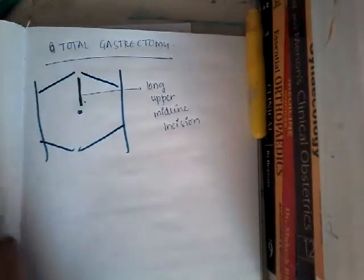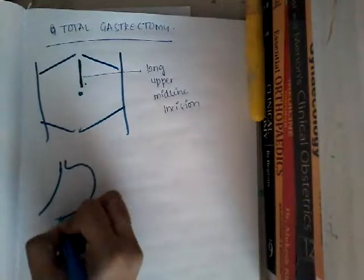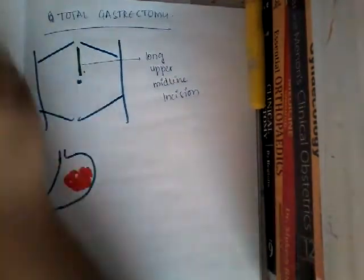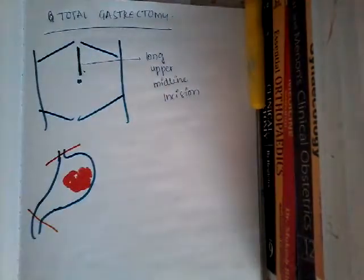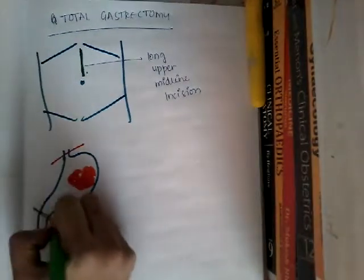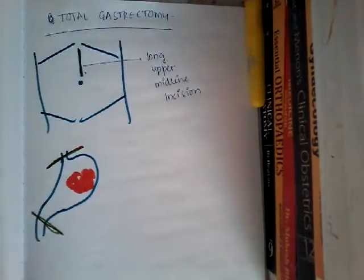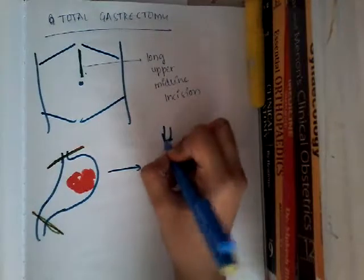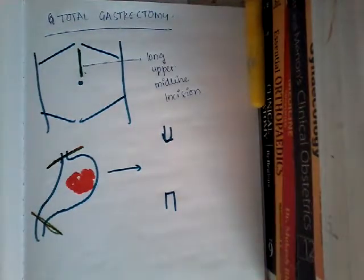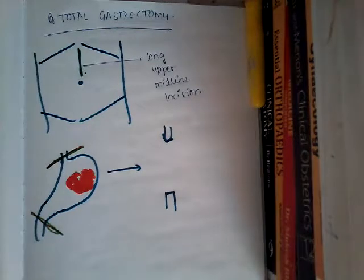You will approach the stomach. Once you approach the stomach, there is a tumor which is present somewhere here. You will dissect the whole stomach here and here, and then remove this part of the stomach. Now you have two parts — two ends. You have removed the stomach en bloc. I am just discussing how you go through the total gastric surgery, not the specific arteries or detailed operative steps.